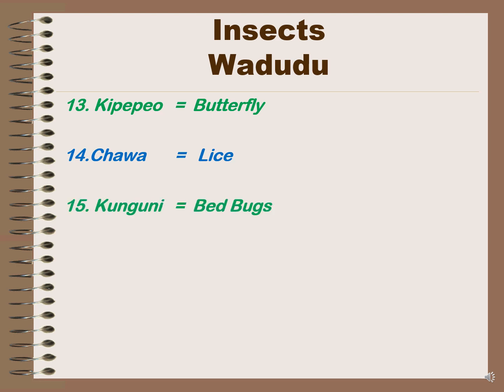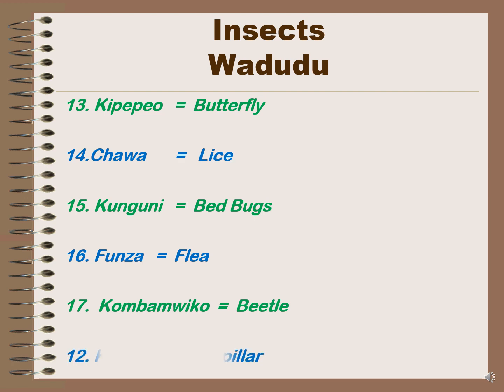Number 15, 'kunguni' means bedbug. Number 16, 'funza' is flea. Number 17, 'komba mwiko' is bito. Number 12, 'kiwavi' is caterpillar.